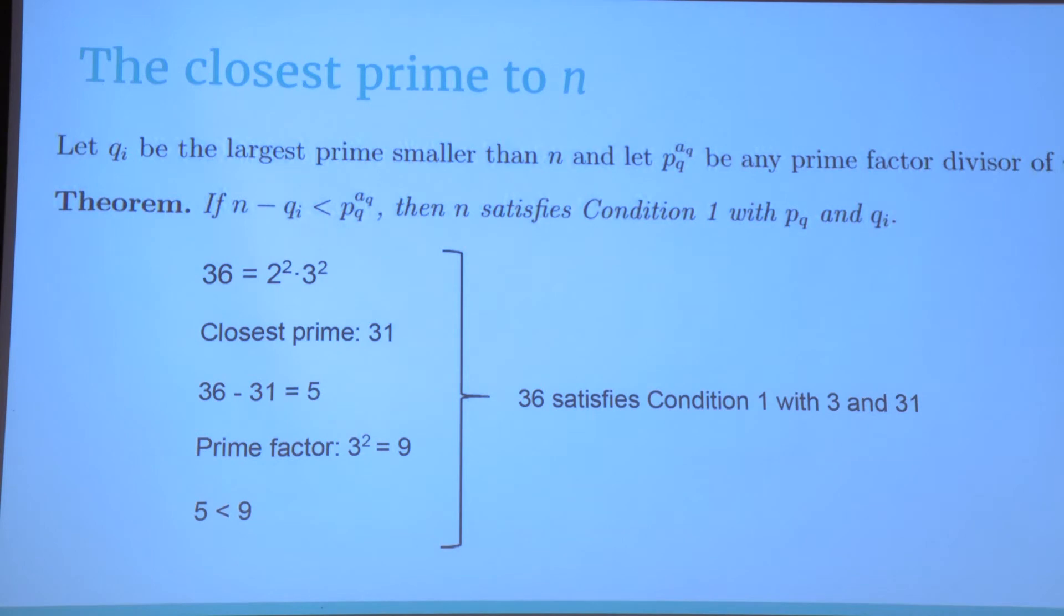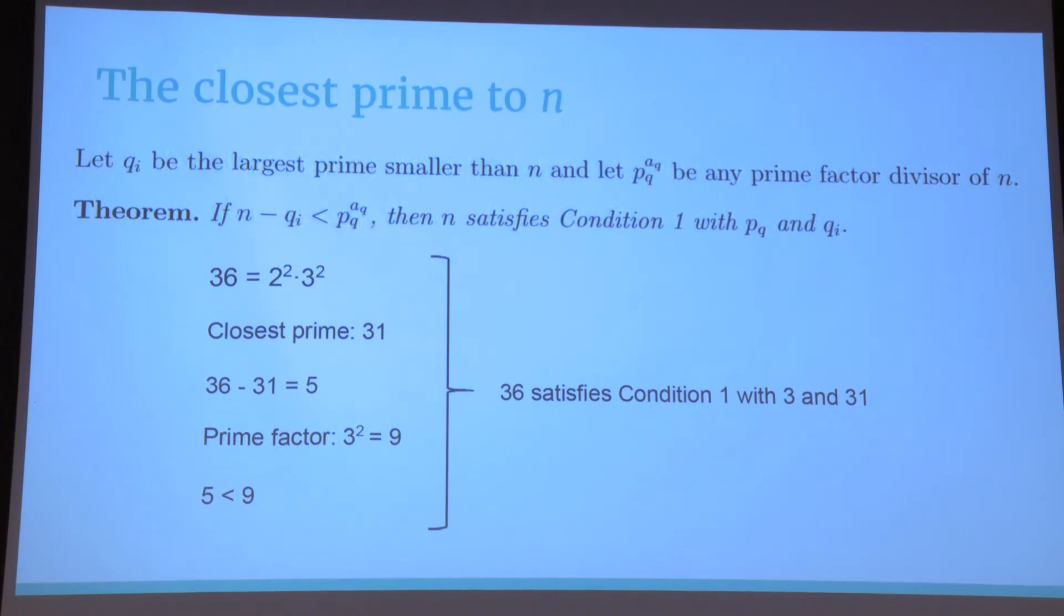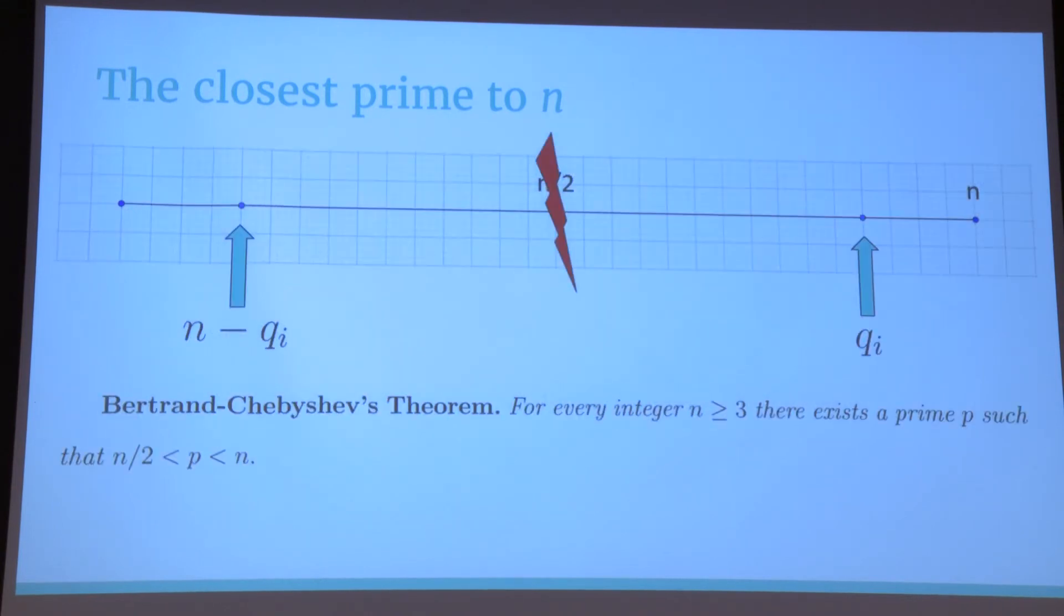With this proof, we will also go into other cases in which n satisfies condition 1. I will just mention one that considers the closest prime to n. Here's another case. Let qi be the closest prime to n. And let pq to the aq be any prime power factor of n. We claim that if the difference between n and the closest prime to n is just more than some prime power factor of n, then n satisfies condition 1. Basically, what we used was Bertrand's theorem, which says that there's always a prime between n halves and n. And with this theorem, we know that n minus qi is just more than n halves. Therefore, k can only be in this interval or in this interval.